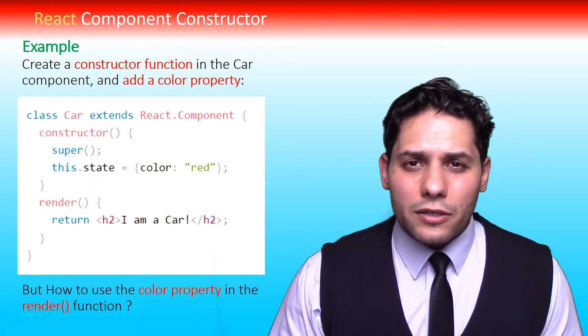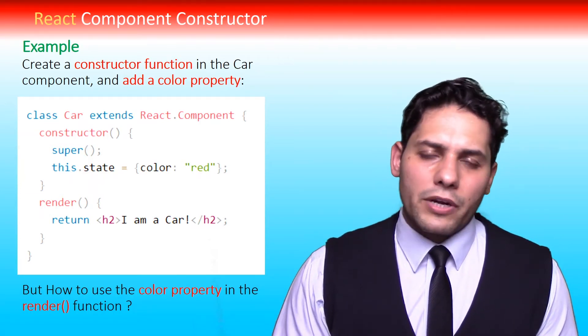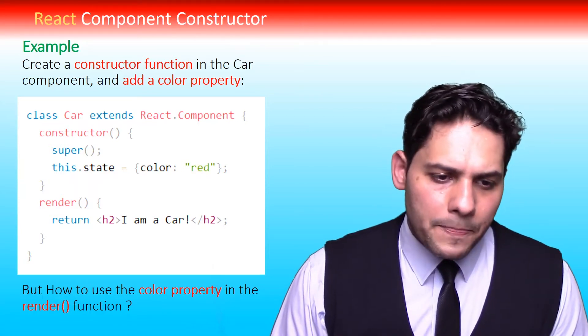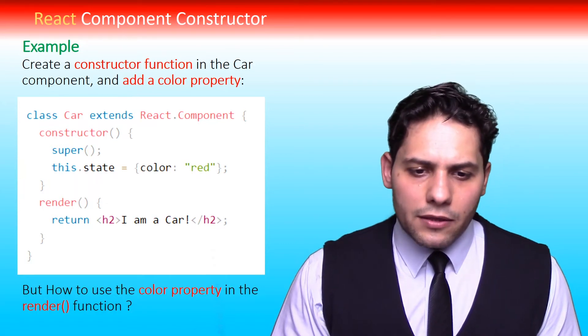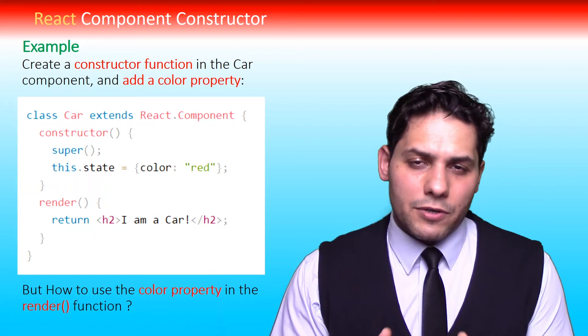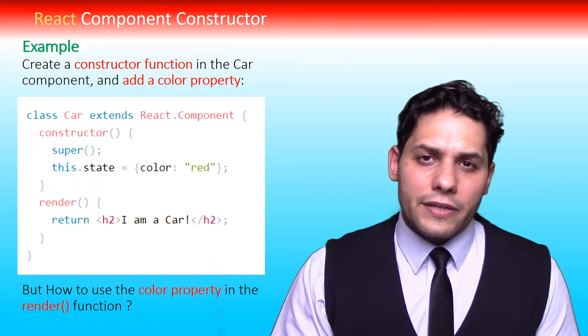In this simple example, we are going to create a constructor function in the Car component and add a color property to it. Let's look at this code: class Car extends React.Component. We are going to create a component that its name is Car, and this component has a constructor.